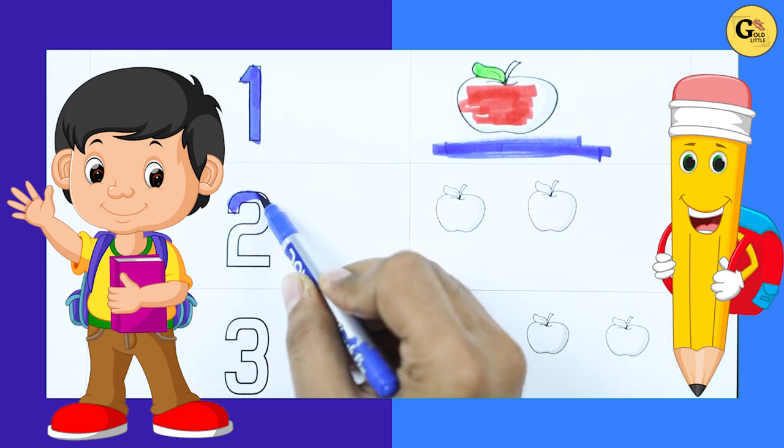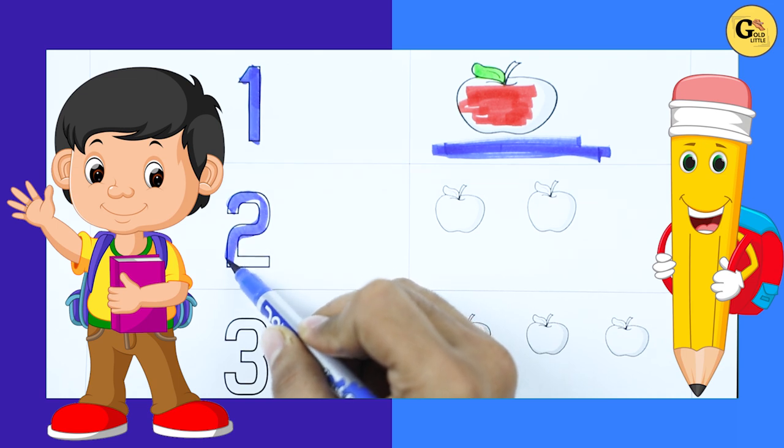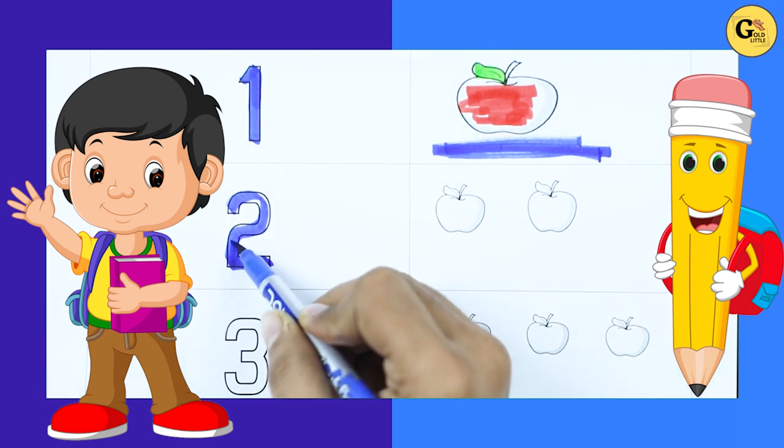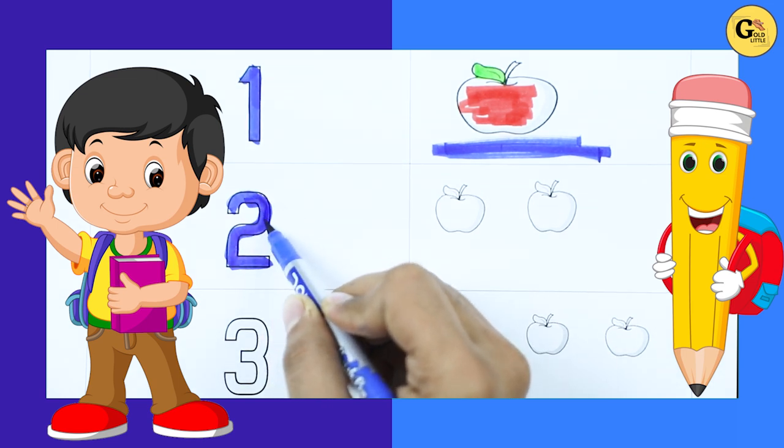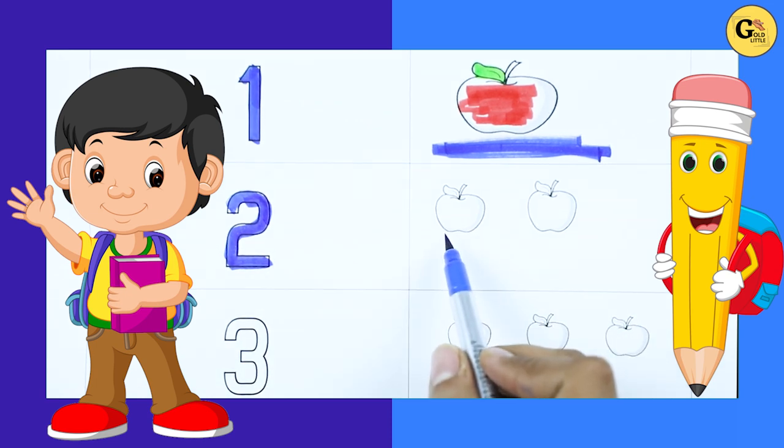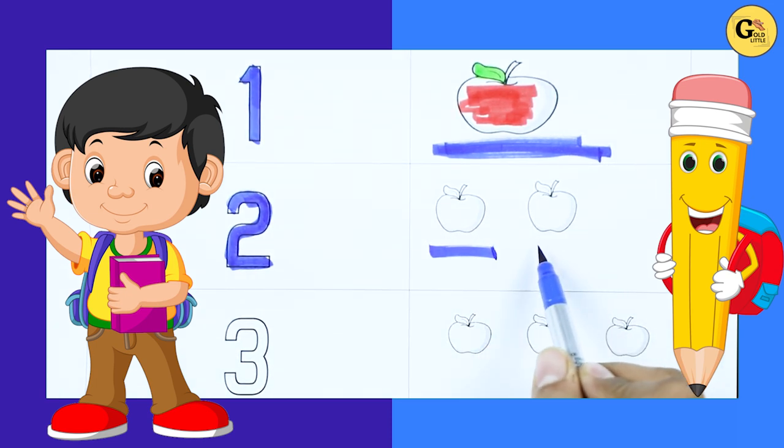Number 2, number 2 with blue color. How many apple here? 1 apple, 2 apple, it's 2 apple.